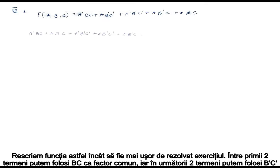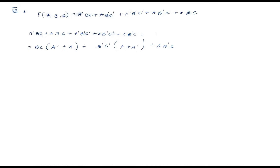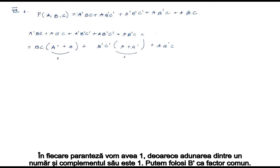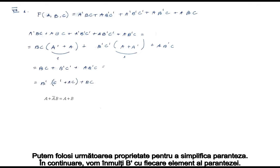We rewrite the function so it is easier to solve the exercise. Between the first two terms, we can use BC as a common factor, and in the next two terms we can use not-B times not-C. In each parenthesis we will have 1, since the addition between a number and its complement is 1. We can use not-B as a common factor. We can use the following property to simplify the parenthesis.